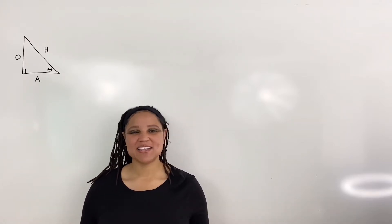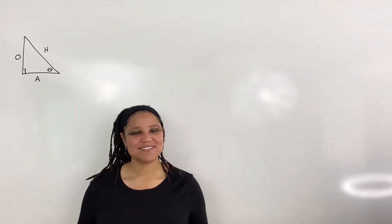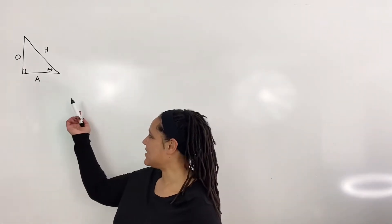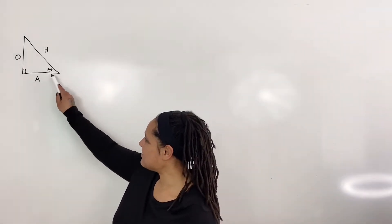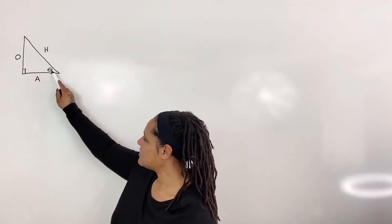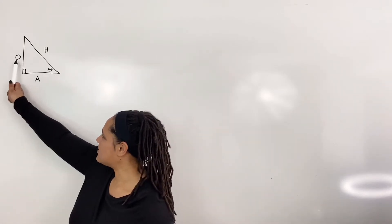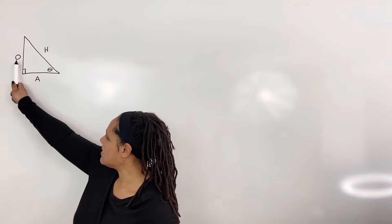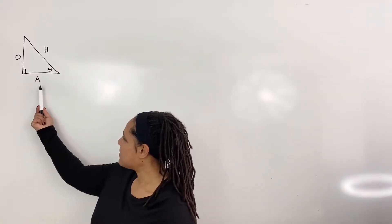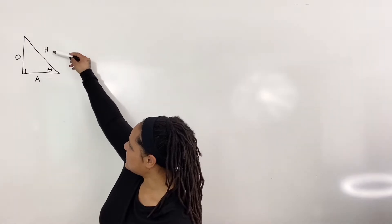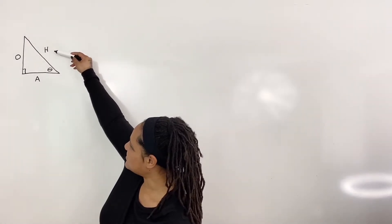We begin with what we already know. Recall a right triangle. Let the given angle be theta, let the side opposite of the given angle be O, let A be the side adjacent of the given angle, and let H be the hypotenuse.